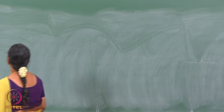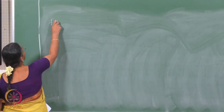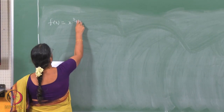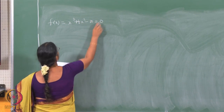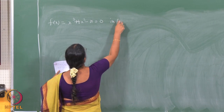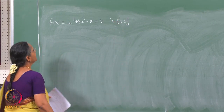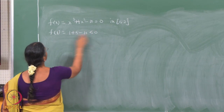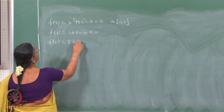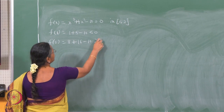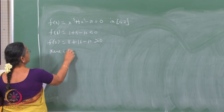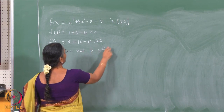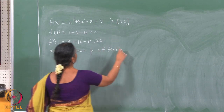Let us consider the following equation: f(x) = x³ + 4x² - 10 = 0 in the interval [1, 2]. We observe that f(1) is negative and f(2) is positive, so there is a root p of f(x) in this interval 1 to 2.